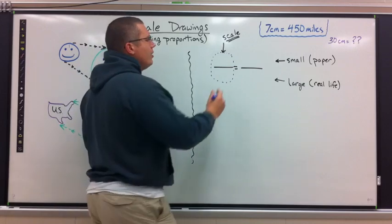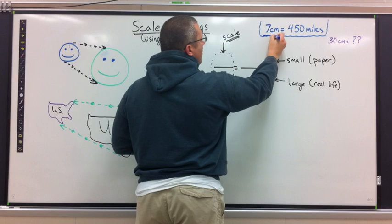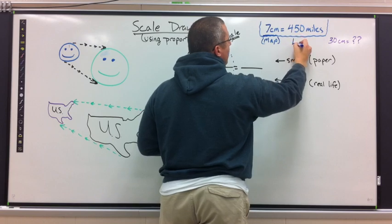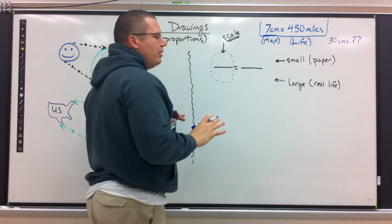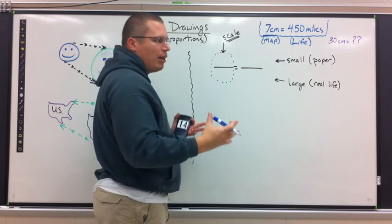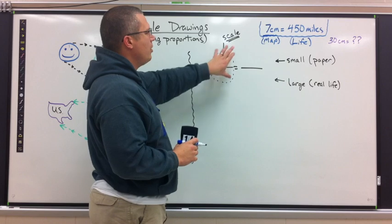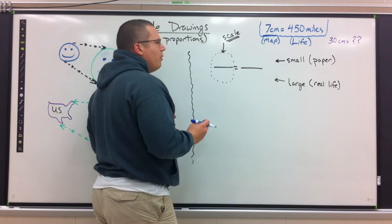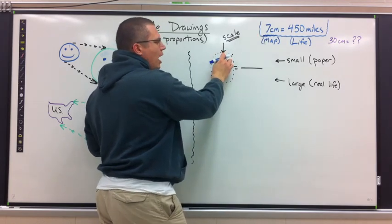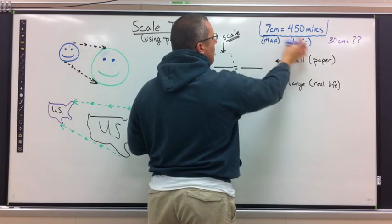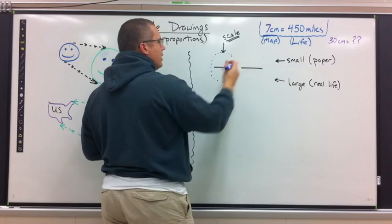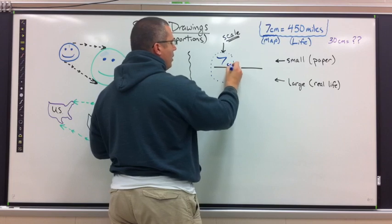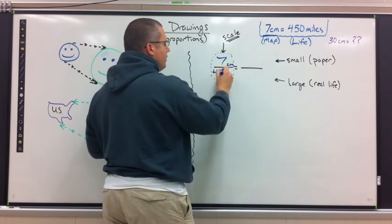The easiest scale we're used to is using a map. The scale we're going to use is: seven centimeters on the map equals 450 miles in real life. The scale always goes on the left — seven and 450 go on the left. We always take the small number to go on top. In this case, seven centimeters represents the smaller picture — the paper measurement.